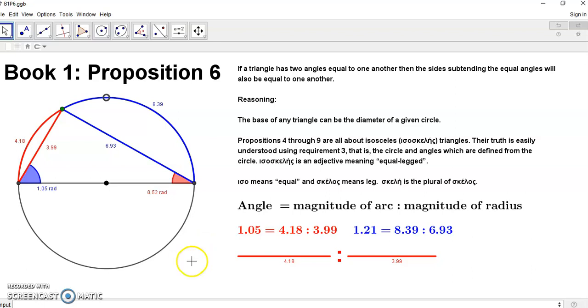Angles come from the circle, they don't come from triangles. Triangles also come from the circle. The triangles were realized after angles. Angles were realized first, long before triangles.